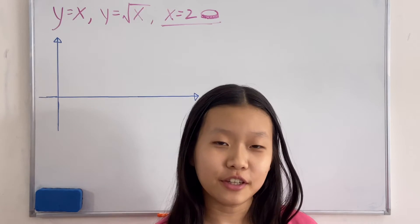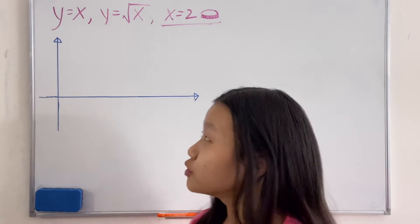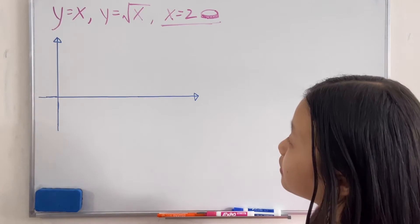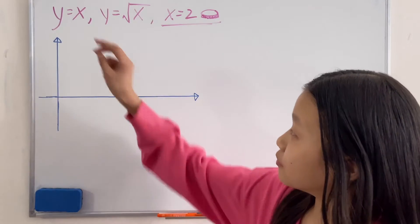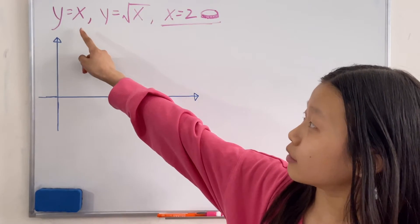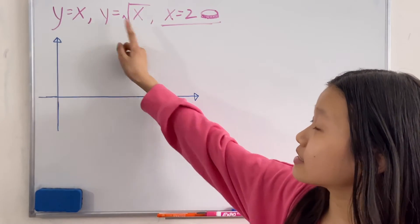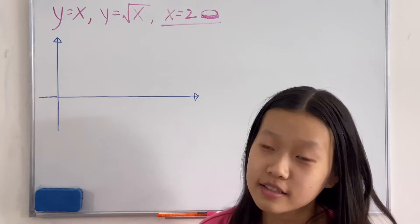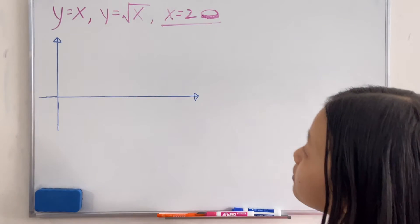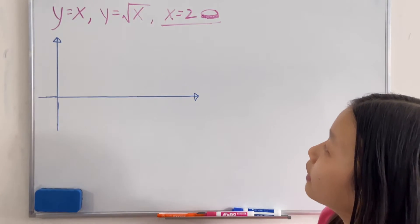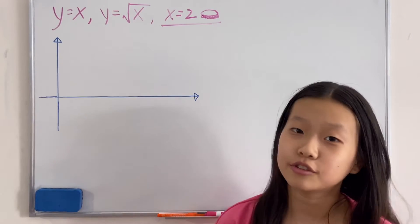Hello everyone. In this video, I'm going to be finding the region bounded by y equals x and y equals square root of x when it is rotated about x equals 2.